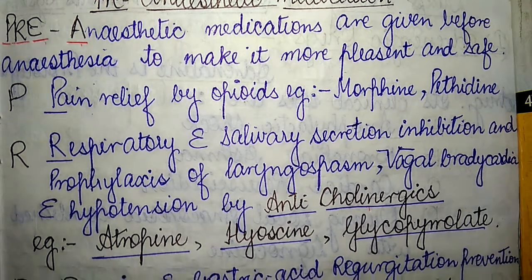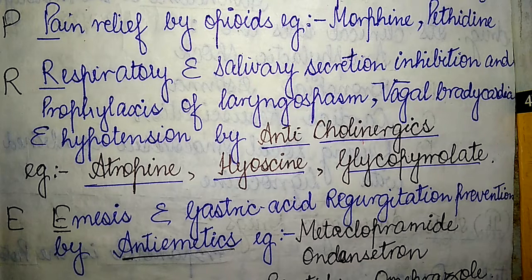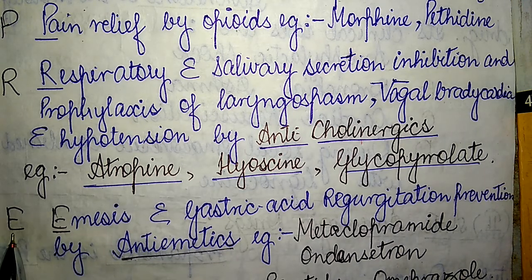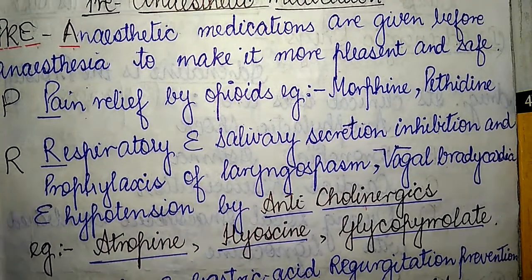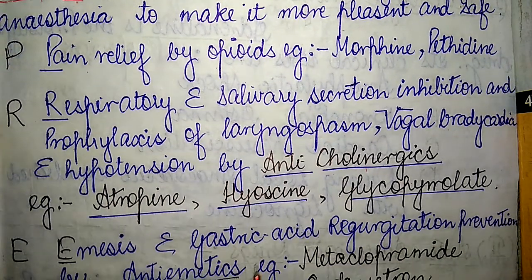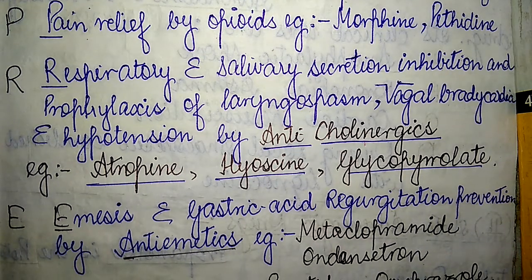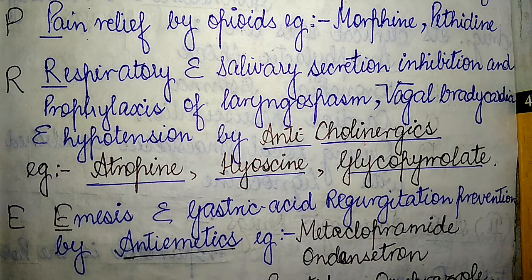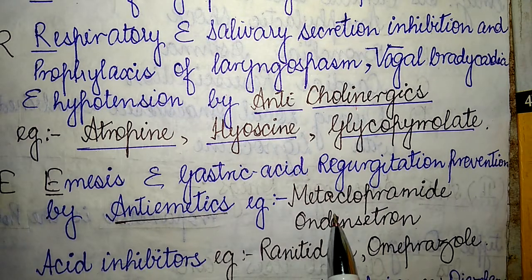The E of PRE refers to emesis and gastric acid regurgitation prevention by antiemetics. Pre-anesthetic medications help prevent emesis and aid in prevention of gastric acid regurgitation during surgeries. Common examples of anti-emetic drugs used include metoclopramide and ondansetron.